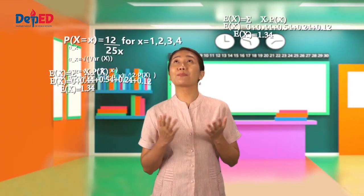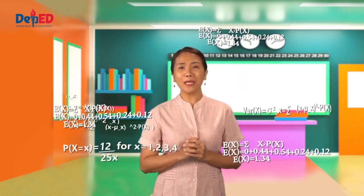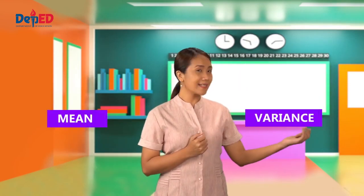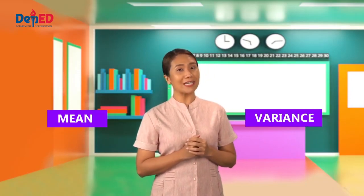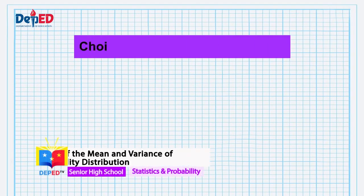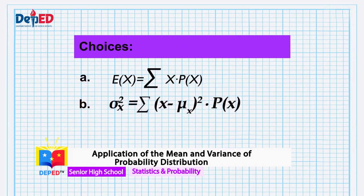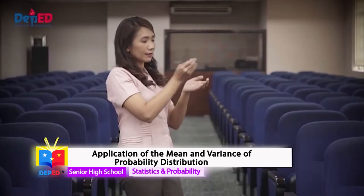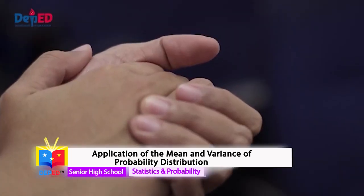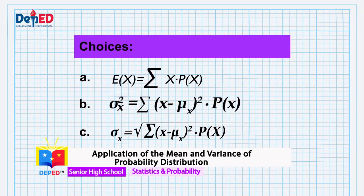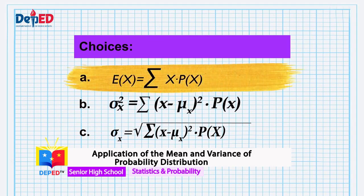Today, be ready to explore beyond your usual borders as we apply our knowledge of mean and variance of probability distribution in real-life problems. Let's start by discussing two situations. I am curious about finding the average number of heads that would appear if I toss two coins together. Which formula should I use? Since I want to look for the average number of heads, that means I need to find the expected value or mean of the distribution. If your answer is A, then you're correct because the formula in A is used for finding the expected value or mean of the distribution.